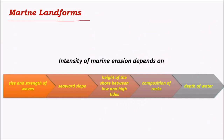The next important landforms are marine landforms. The intensity of marine erosion depends on various features like the size and strength of waves. For example, waves are much higher in the Southern Hemisphere compared to the Northern Hemisphere because of less landmass, which facilitates wind flow at high velocities. The seaward slope also matters, as does the height of the shore between low and high tides. High tides greatly influence the formation of marine landforms — in enclosed seas like the Gulf of California and the Red Sea, tides are much higher. The composition of rocks around the sea also matters.